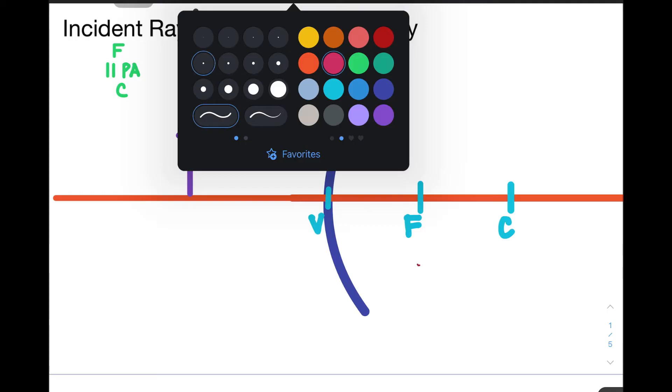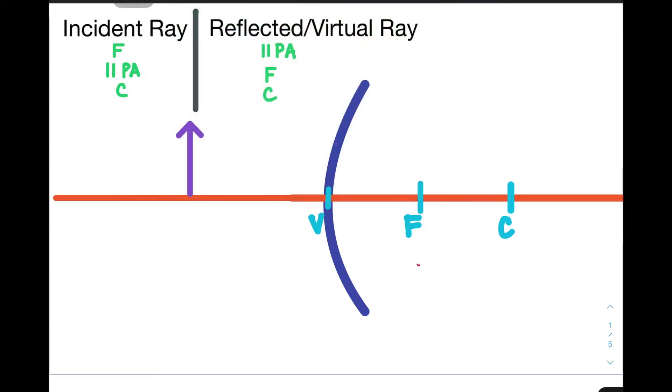So, let's start with an incident ray which is aligned with the focus. What I like to do is I extend it to the other side of the mirror. However, the incident ray only stops at the surface of the mirror because that is the point where it is reflected. Now, what happens when it hits the surface if it is aligned with the focus? According to the table above, it will then be reflected parallel with the principal axis.